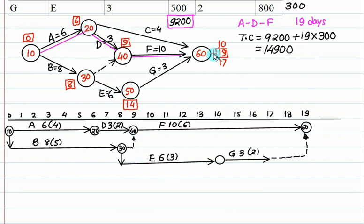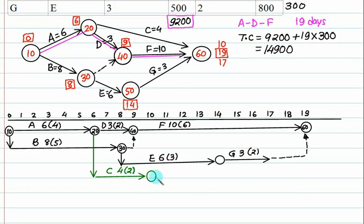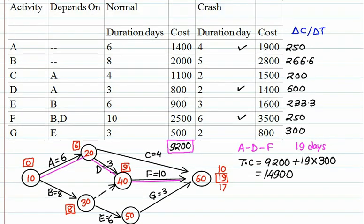One branch is still left from node 20 to node 60. It starts from day 6 and takes 4 days, finishing on day 10. This is activity C — C takes 4 days and the crash duration for C is 2 days. Continue this as a dotted line. Now identify which activities are critical: A, D, and F on the critical path, while also focusing on your indirect cost of 300 per day.